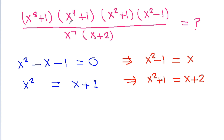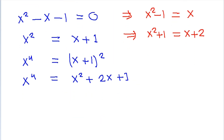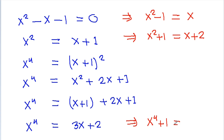Now we have to find the value of x to the power 4 plus 1. Squaring x squared equals x plus 1 on both sides gives x to the power 4 equal to x plus 1 whole square, which is x squared plus 2x plus 1. Substituting x squared equals x plus 1, we get x to the power 4 equals 3x plus 2, so x to the power 4 plus 1 equals 3x plus 3.